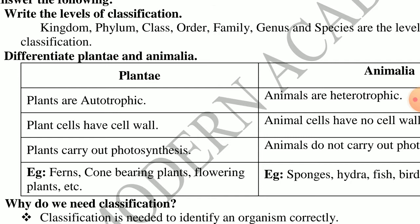The seven levels are: kingdom, phylum, class, order, family, genus, and species.